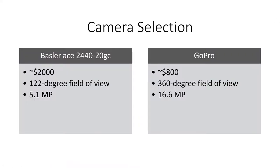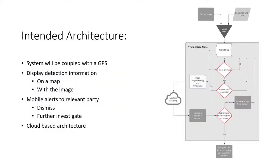The cameras selected are the Basler ace, which has a wide field of view and costs $2,000, and the GoPro Max, which has a full 360-degree field of view and only costs $800. The intended architecture for this prototype involves coupling captured images and GPS location data. The data for testing purposes was supposed to be provided by another project, the kiwifruit robot, but it will be coupled in the future.